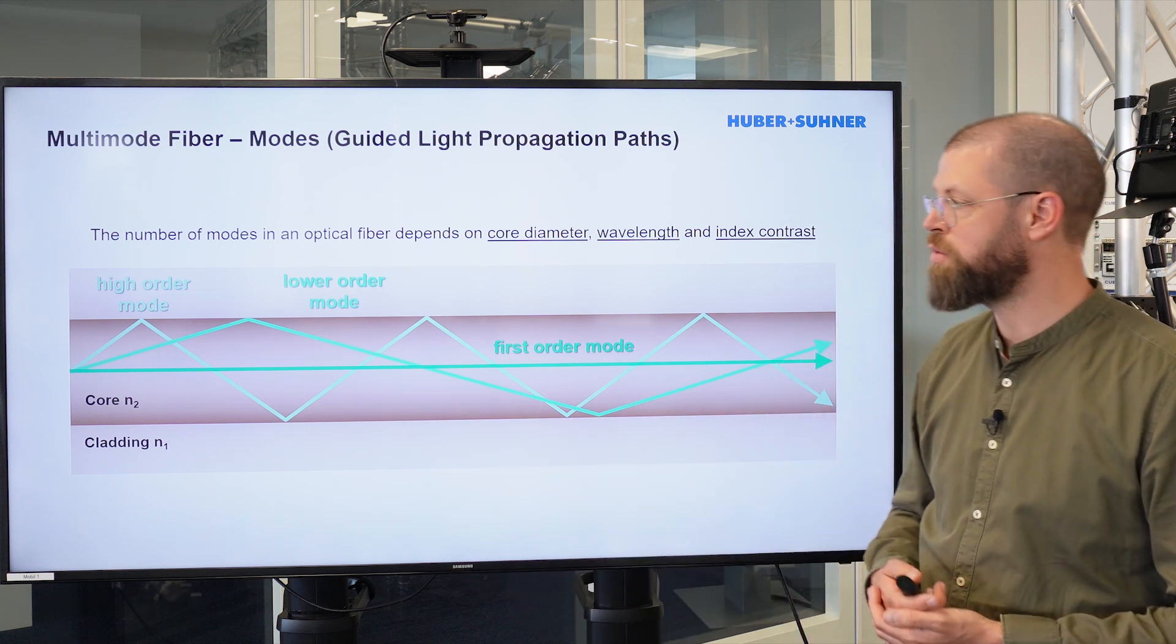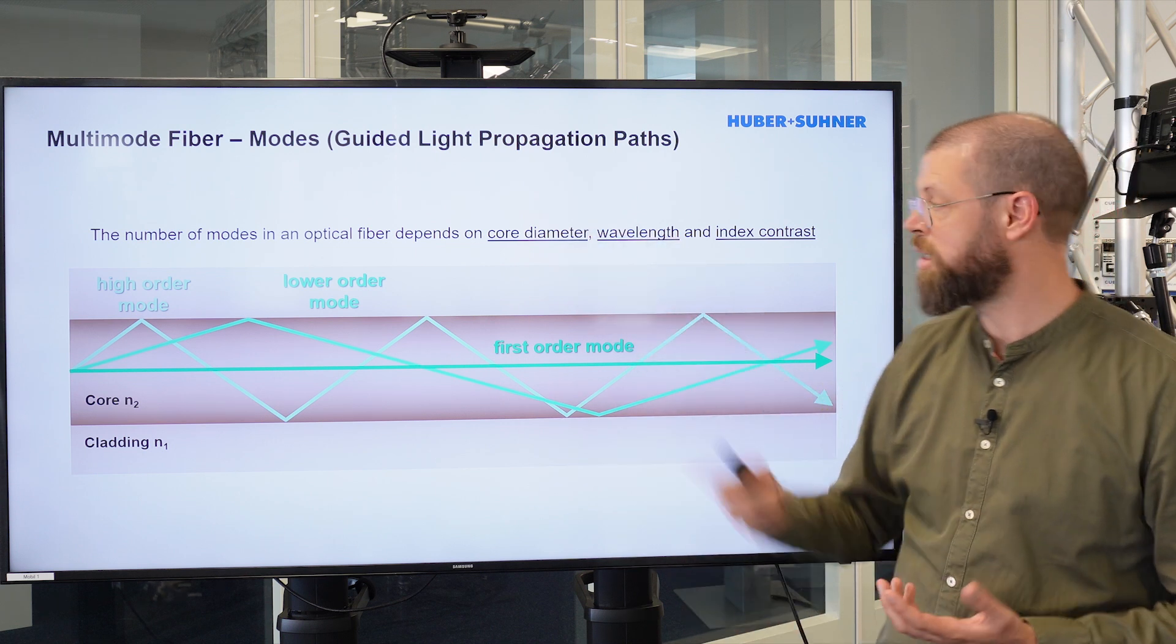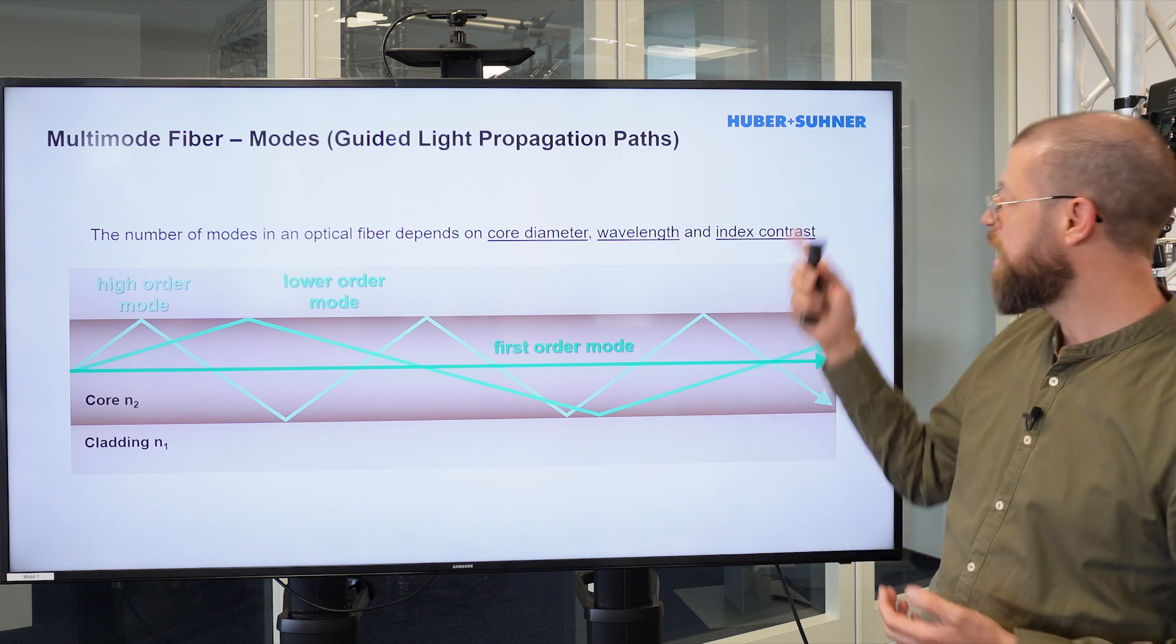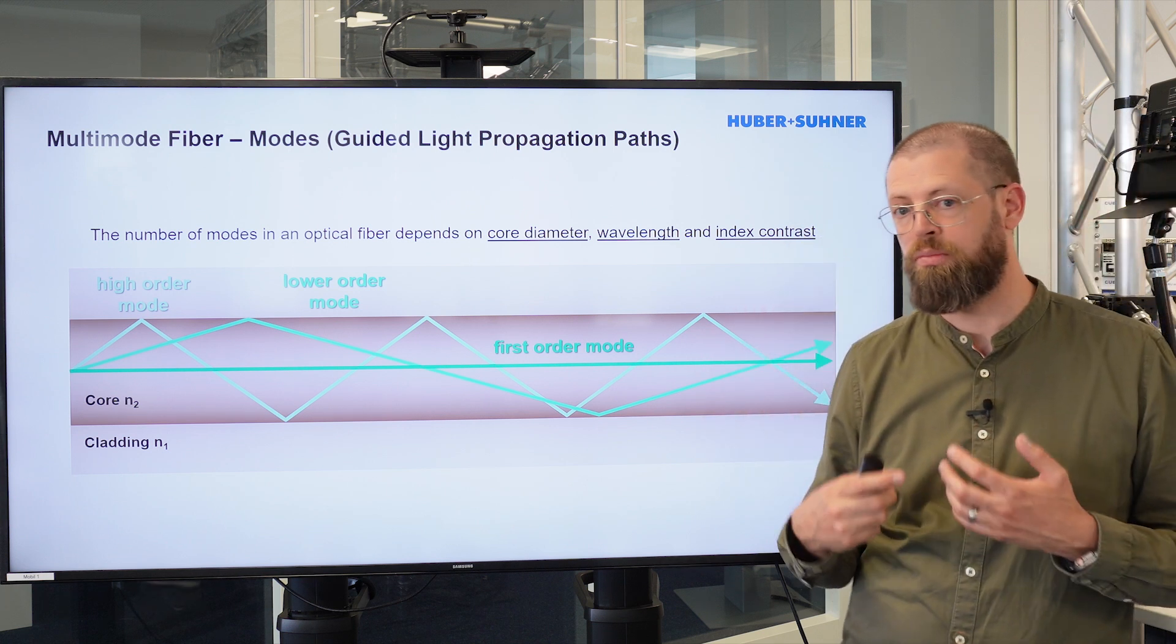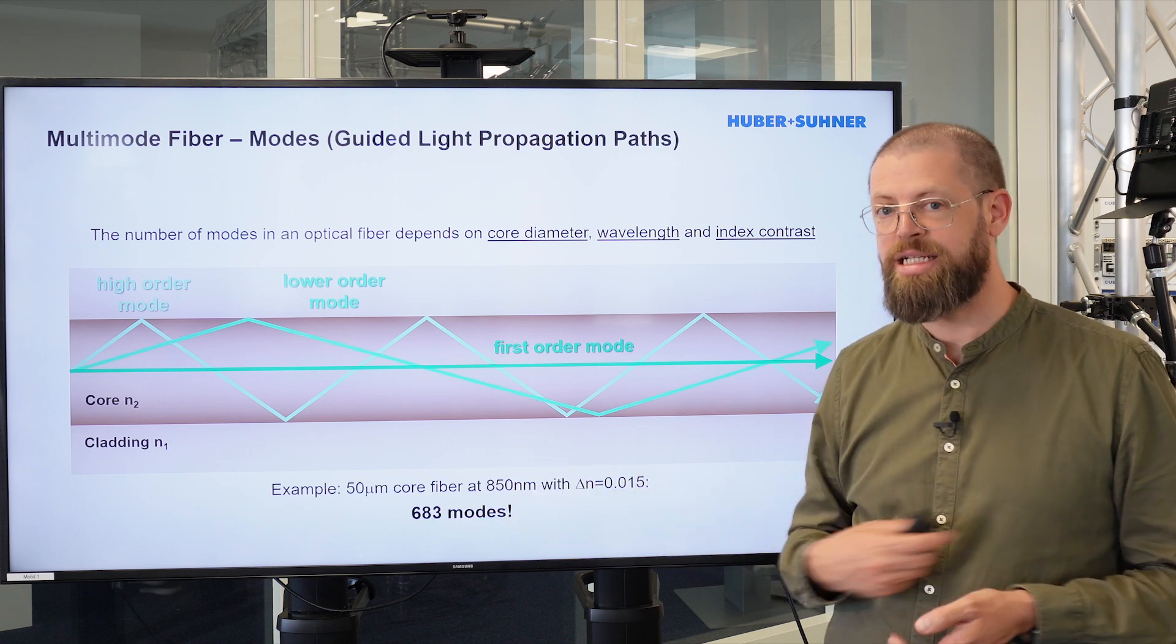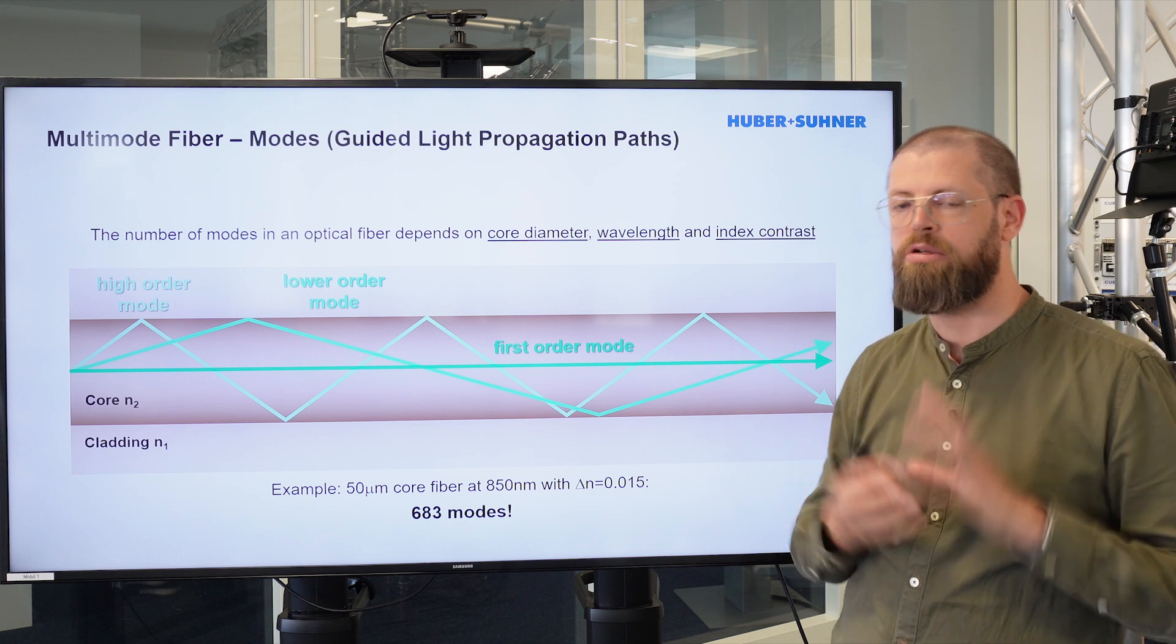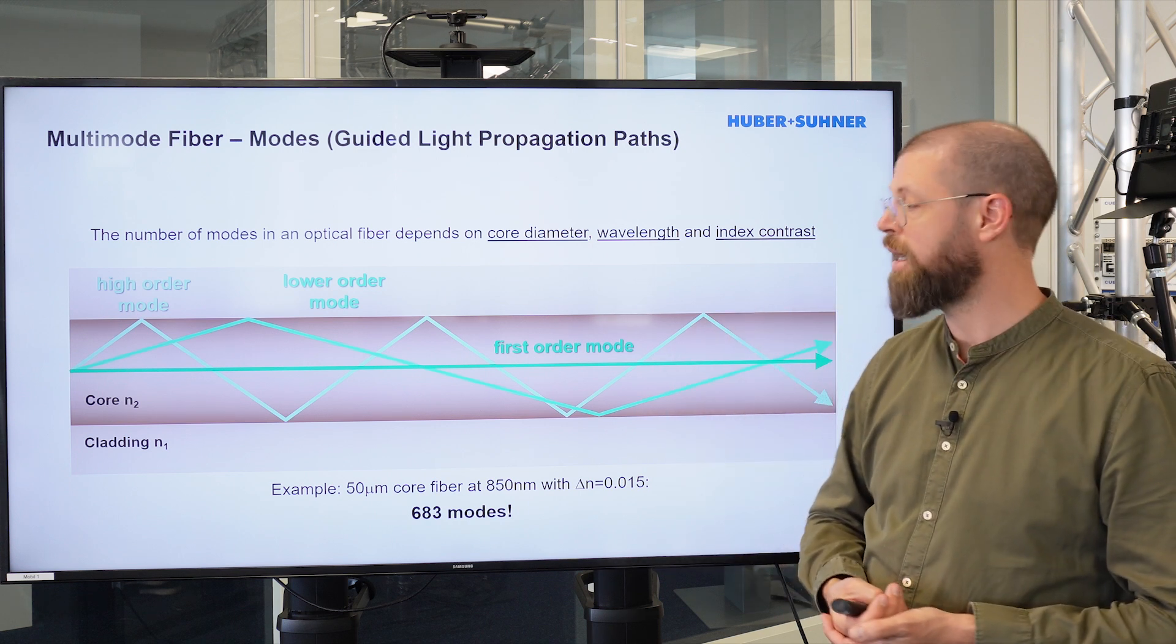To give you an idea how many modes we're talking about, if we've got a core diameter of 50 micrometers, a wavelength of 850 nanometers, and an index contrast of 0.05, we will end up at 683 different modes. So 683 different paths the light takes through the fiber cable.